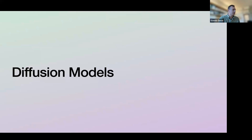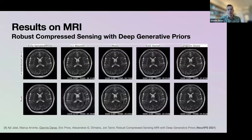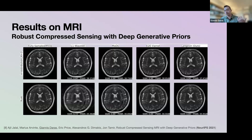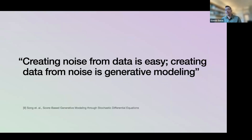Why did we care about diffusion models? Because we were trying to solve a real problem: accelerating MRI. This failed with GANs — we spent months trying to train good generators for MRI and use them as priors, but it didn't work. What did work was diffusion models. In a paper accepted at NeurIPS, we showed we can accelerate MRI six times and still get reconstructions that are potentially diagnostically useful. That convinced us we needed to work with diffusion models — and that turned out to be the right call.